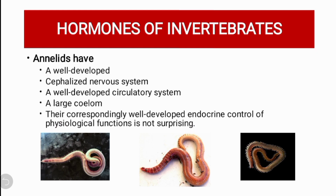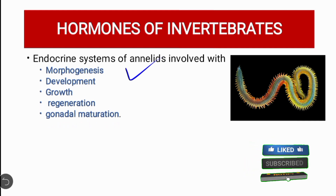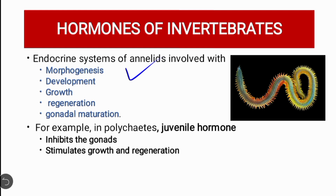Annelids have a well-developed nervous system with a cephalic nervous system — their major organs concentrated in the head — a well-developed circulatory system, and a well-developed endocrine system. Their endocrine system is involved in morphogenesis, development of different organs and cells, growth, regeneration, and gonadal maturation. In polychaetes, juvenile hormone inhibits gonadal synthesis and stimulates growth and regeneration.